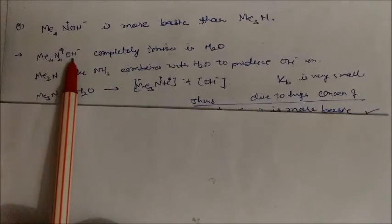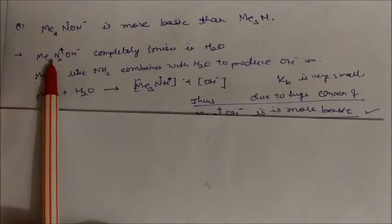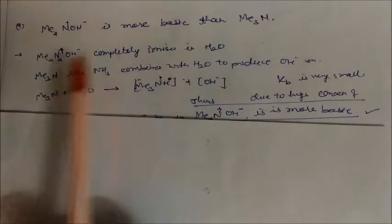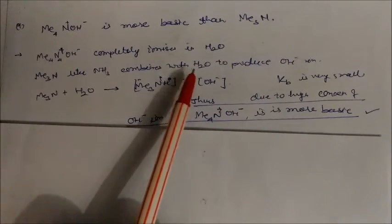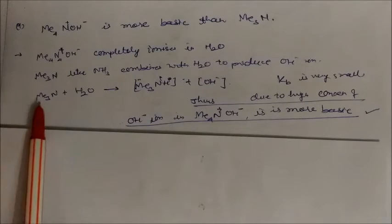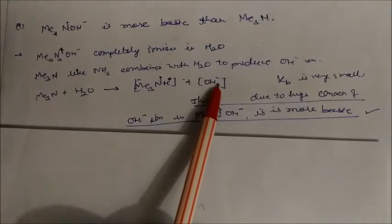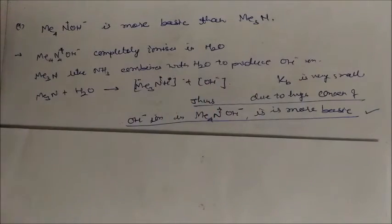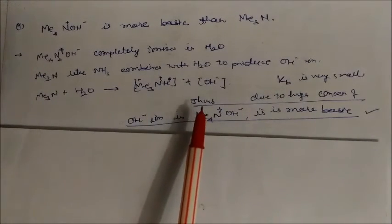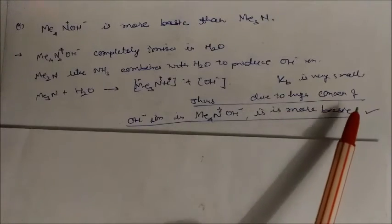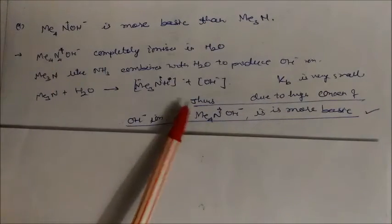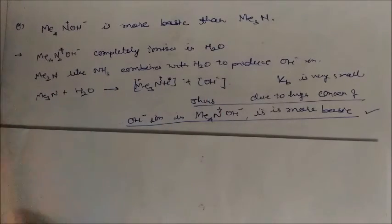Tetramethylammonium hydroxide, (CH₃)₄N⁺OH⁻, is more basic than trimethylamine. Tetramethylammonium hydroxide completely ionizes in water, giving a high concentration of OH⁻. Trimethylamine, like ammonia, combines with water to produce OH⁻ ions, but the Kb of this reaction is very small. Because the concentration of OH⁻ is much higher for tetramethylammonium hydroxide, it is more basic than trimethylamine.